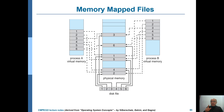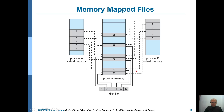Note that once again, in the case of shared files, in memory you're keeping a single copy in the kernel buffers. These are the kernel buffers — 1, 2, 3, 4 — inside the physical memory.